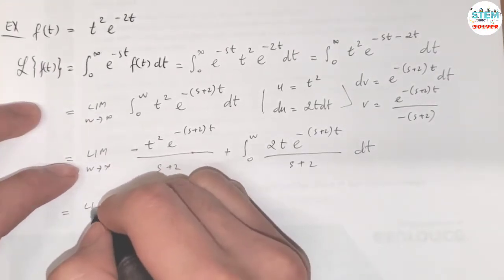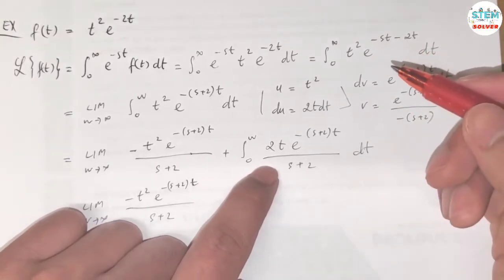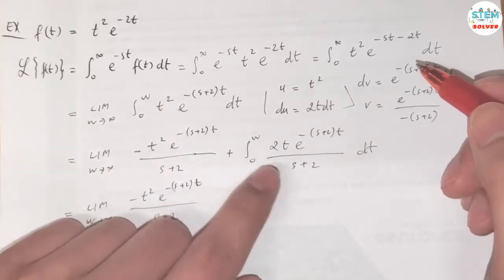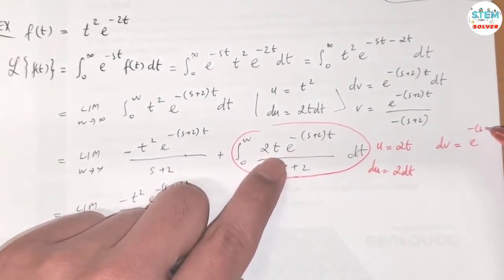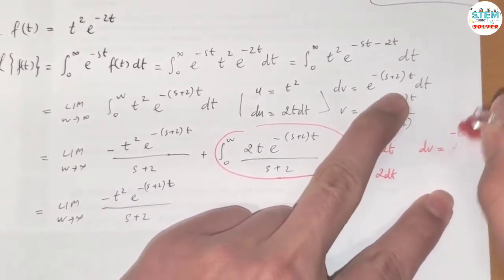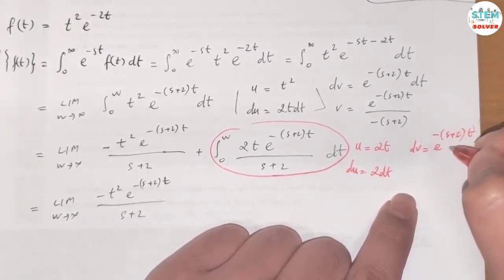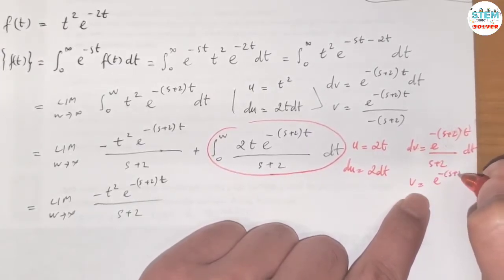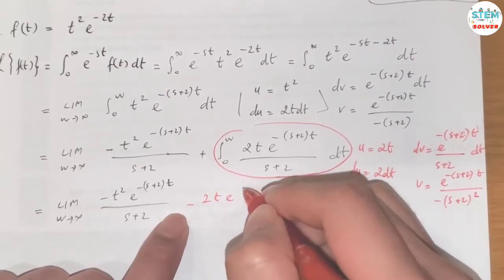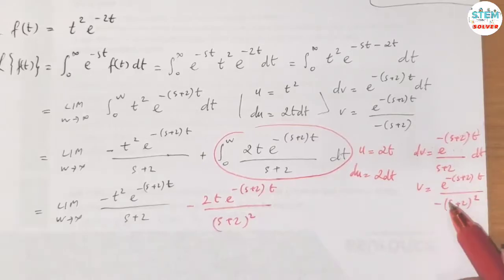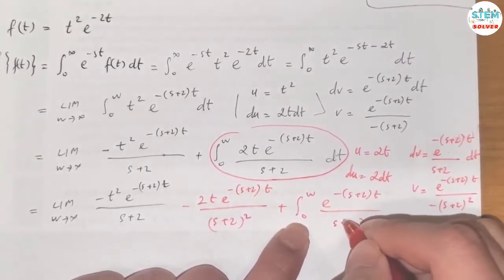For this remaining integral, we are going to apply integration by parts again. Let u equal 2t, then du equals 2 dt. dv equals e to the negative s plus 2 times t over s plus 2, dt. Then v equals e to the negative s plus 2 times t over negative s plus 2 squared. This becomes negative 2t e to the negative s plus 2 times t over s plus 2 squared, plus the integral from 0 to w of e to the negative s plus 2 times t over s plus 2 squared, dt.